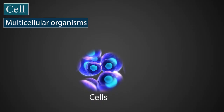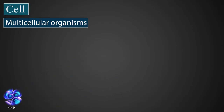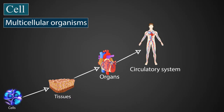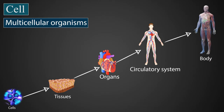In these organisms, groups of cells join together and form tissues, which in turn group together to form organs, which then join together to form an organ system. And all organ systems work together and function like a body.